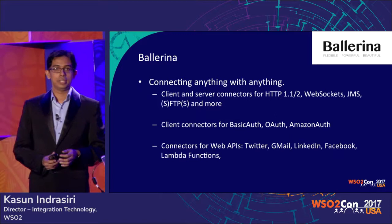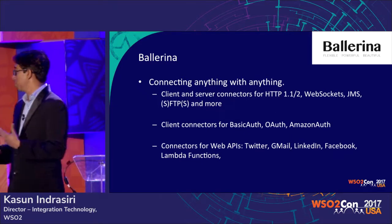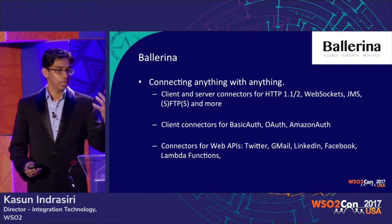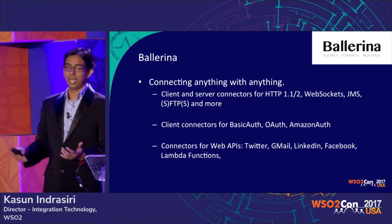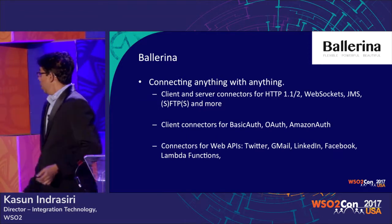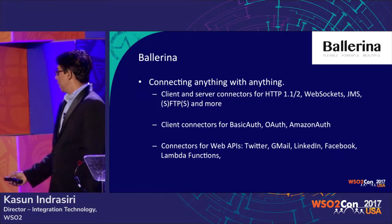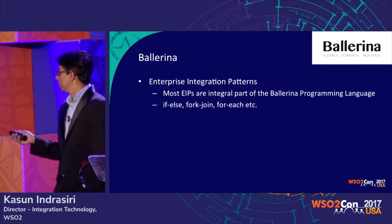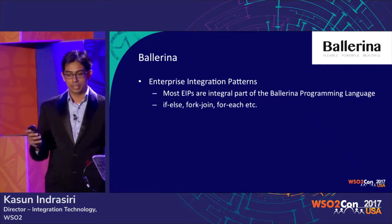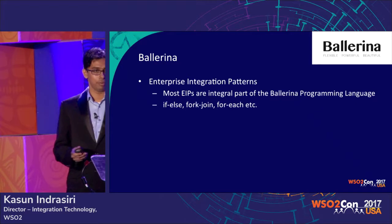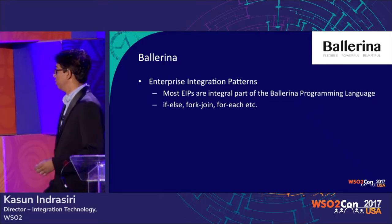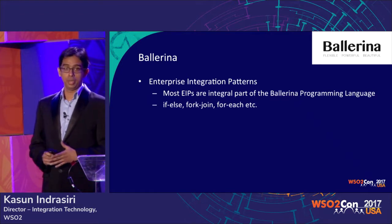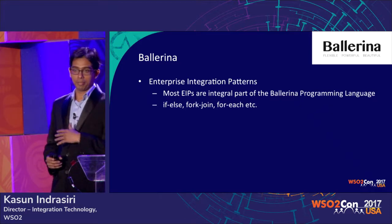Connectivity is a key aspect of Ballerina. Since we support all types of integration, server connectors and client connectors are critically important — inbound protocols are catered with server connectors, and outbound integrations are handled with client connectors. We have connectors for different web APIs including Twitter, Gmail, and more. When it comes to integration solutions, EIP is important, and most Enterprise Integration Patterns are already integral parts of the Ballerina language — for example, fork-join and for-each. We will continue improving the language to cover 100% of all EIPs.